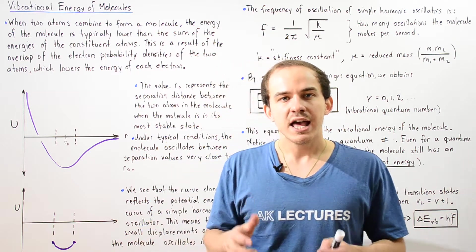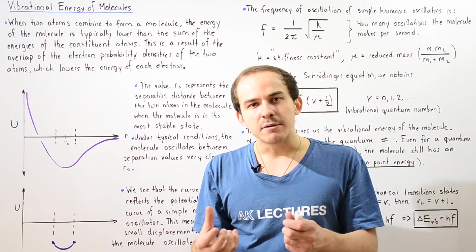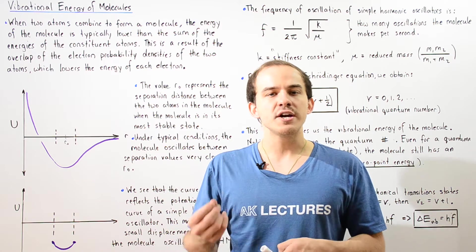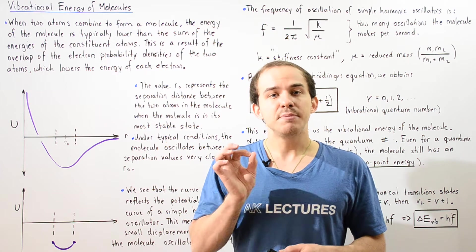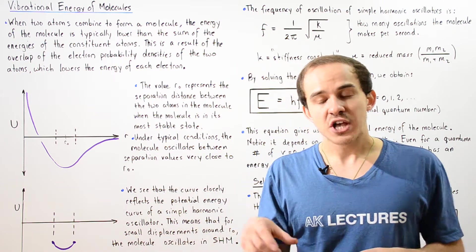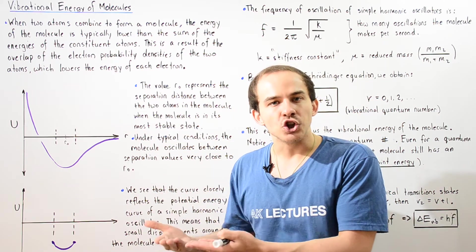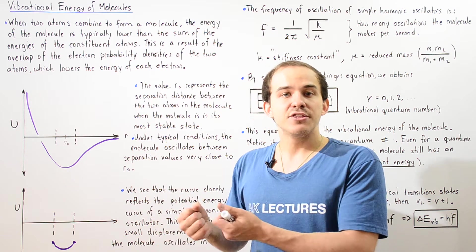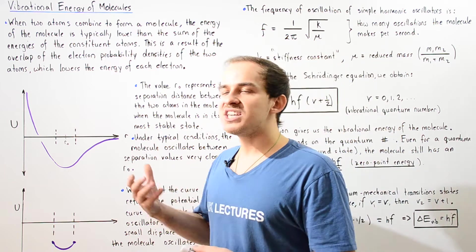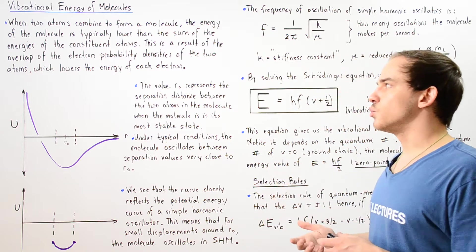Generally speaking, the molecule is lower in energy and more stable than the sum of the energies of the constituent atoms. That's because when atoms combine, their electron probability densities — their electron clouds — also combine and overlap. This increases the volume in which the outer electrons of our atoms can be found. By Heisenberg's uncertainty principle, this increase in volume means the electrons have a smaller momentum and therefore a smaller energy, making the molecule more stable than its constituent atoms.